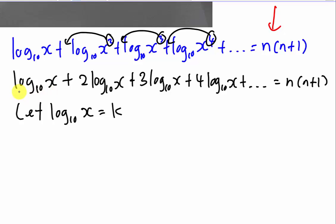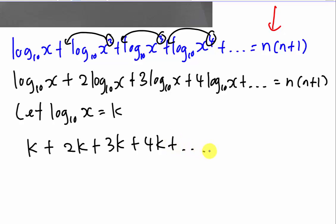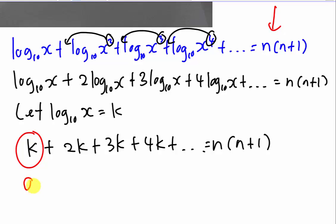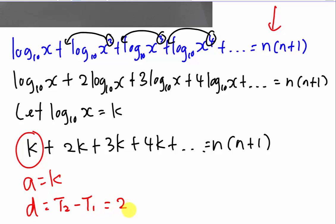Since I can see so many log₁₀X terms, substituting K gives: K plus 2K plus 3K plus 4K plus dot dot dot equals N(N+1). The progression now looks very simple. I can see the first term A equals K, and the common difference D equals 2K minus K, which is also K. Checking: 3K minus 2K is also K, confirming D equals K. This is clearly an arithmetic progression, not a geometric progression — because for GP, the ratio U3/U2 would not equal U2/U1.